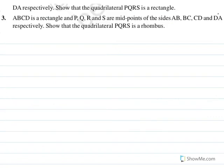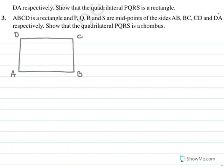ABCD is a rectangle in which P, Q, R, S are midpoints of sides AB, BC, CD, and DA. We need to show that the quadrilateral PQRS is a rhombus. Given ABCD is a rectangle and PQRS are the midpoints, we need to prove PQRS is a rhombus.